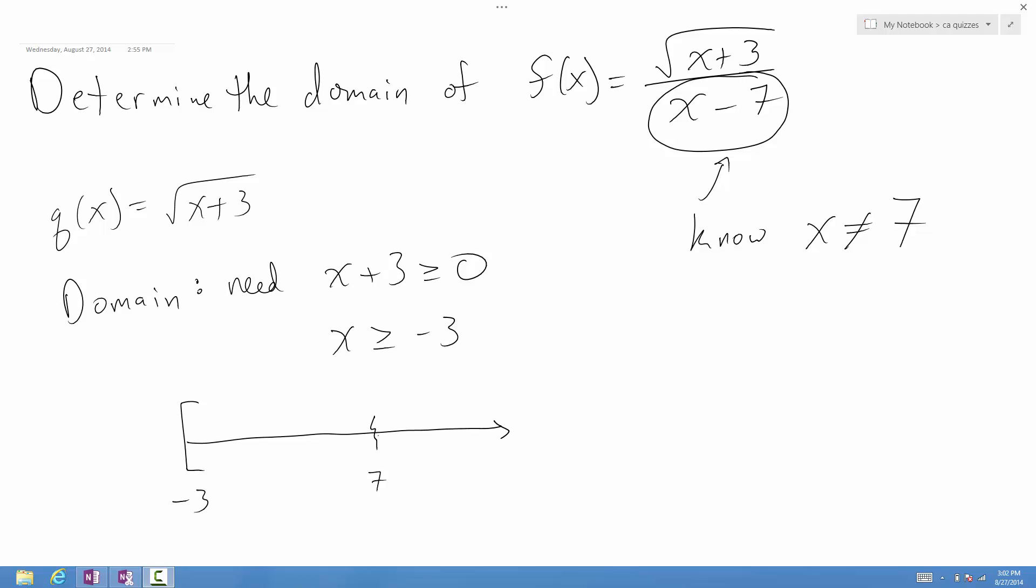And so what we will say is the domain goes from negative 3 to infinity, but there's a break in it at 7. And so how we'll distinguish that break is if you think of it as an open point, there's a break there. And so what I will do is I will think of it as being parentheses at 7 in either direction. So in a sense, we go from negative 3 up to 7, jump over it, and then go from 7 to infinity.